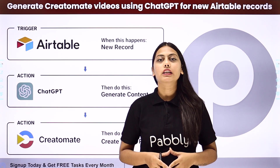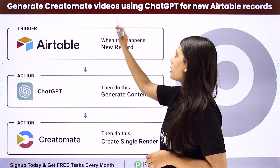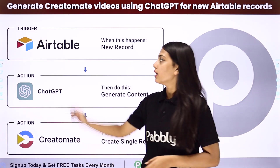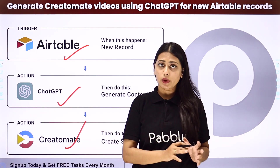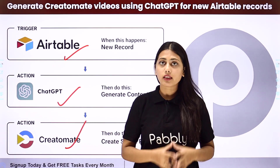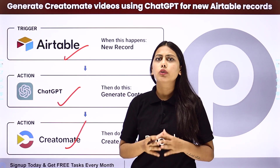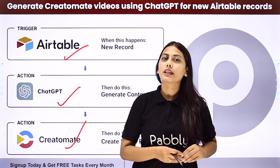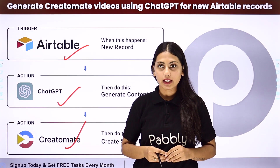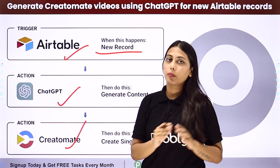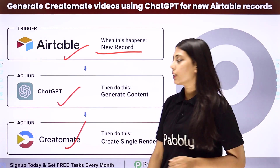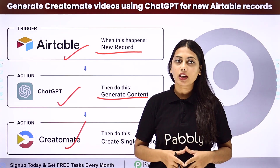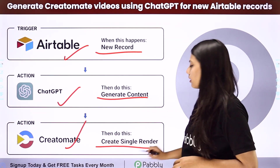In this video we will learn how to generate Creatomate videos using ChatGPT for new Airtable records. We will integrate Airtable, ChatGPT, and Creatomate so that we take the title of content from Airtable, generate content about that title using ChatGPT, and then create a video using Creatomate. We will create this automation with Pabbly Connect, where the trigger will be a new record from Airtable, the first action will be ChatGPT to generate content, and the second action will be Creatomate to create a single render video.